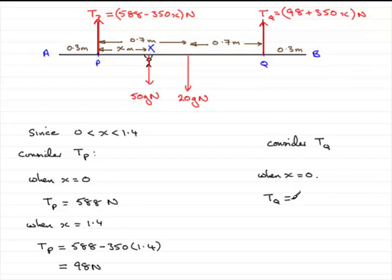And then when x is 1.4, the tension in Q equals 98 plus 350 times 1.4. If you work that out, you get 588 newtons.